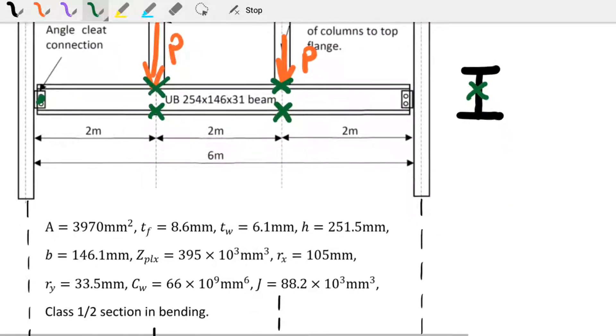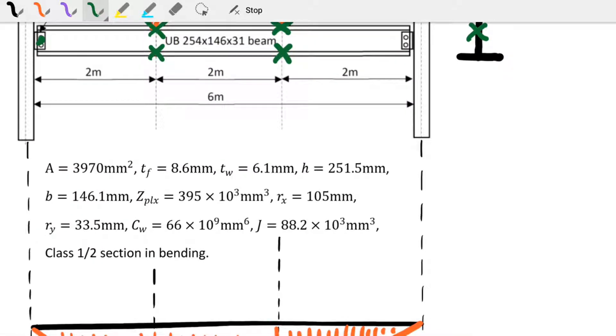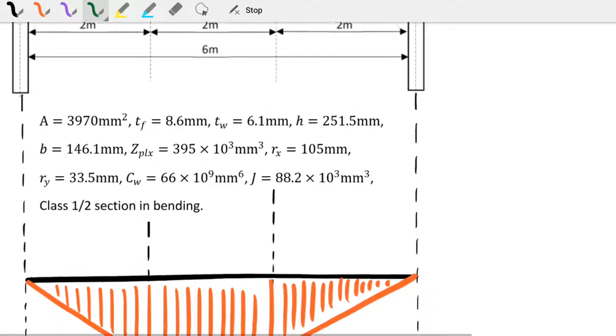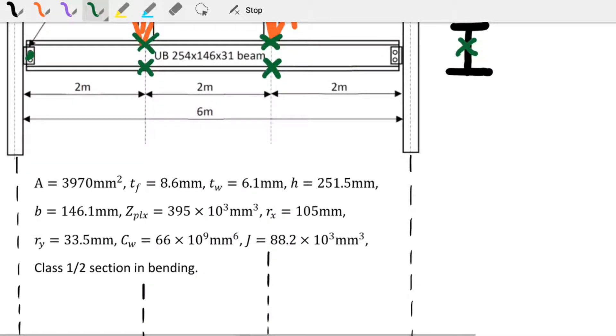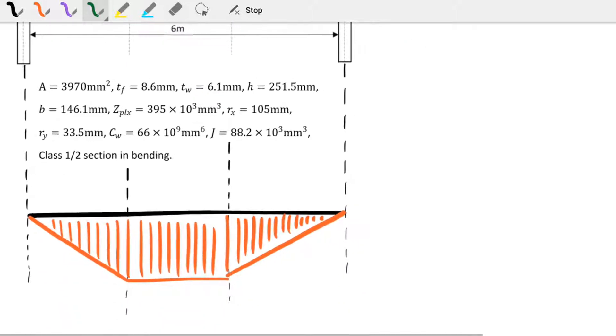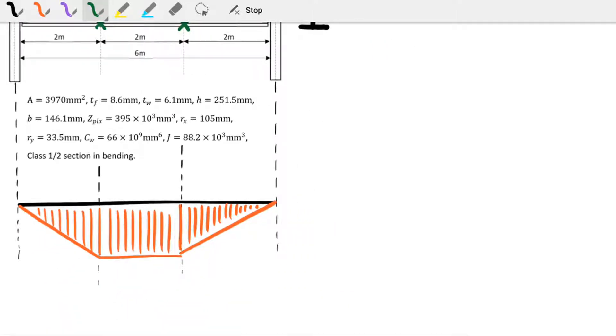When it comes to the section, I've listed all the different properties of the beam, the UB 254x146x31 beam, and the first thing we need to do is calculate the bending moment diagram. I've already put a diagram down below and I'm going to calculate the maximum moment in the beam. I'm going to call it MF so you realize this is a fire moment, just to clarify that.